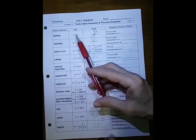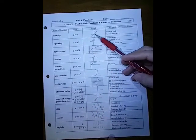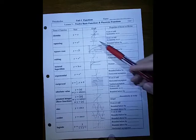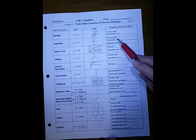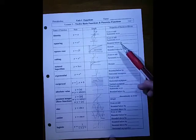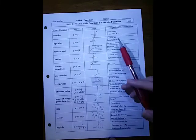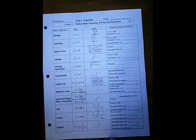The identity function, which is y equals x, is a straight line through the origin with a slope of 1. Is that an even or an odd function? And because of that, is it symmetric with respect to the y-axis or the origin? You should have selected that this is odd and symmetric with respect to the origin.